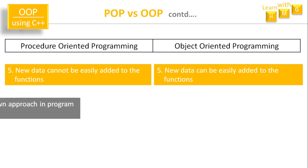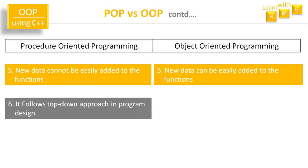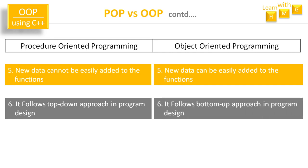POP follows a top-down approach of program design — starting from the main program, with small functions accomplishing small tasks, going from higher level to lower level. OOP follows a bottom-up approach — the design starts from a lower level, small modules are developed first, and then they are integrated together to form a complete system.